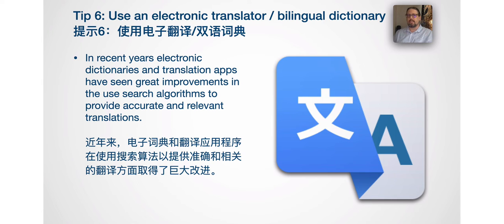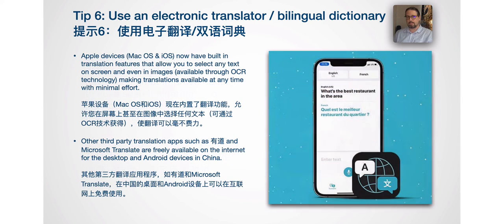Tip number six: use an electronic translator and bilingual dictionary. In recent years, electronic dictionaries and translation apps have seen great improvements in search algorithms to provide accurate and relevant translations. Apple devices — macOS and iOS — now have built-in translation features allowing you to select any text on screen, and even text in images via OCR technology, making translations available at any time with minimal effort. Other third-party translation apps such as Yodao and Microsoft Translate are also freely available on the internet for desktop and Android devices.